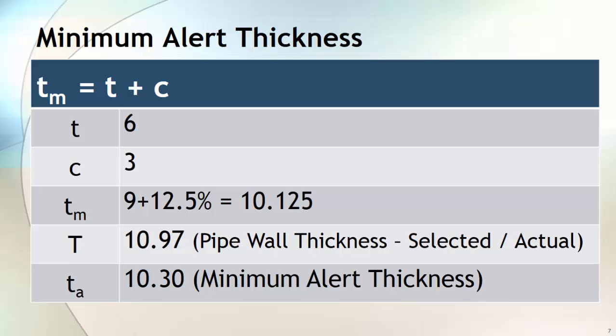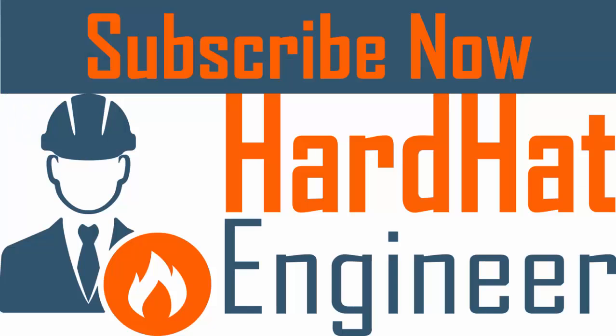Hope you understand the concept of the different types of thickness used in API 570, and now you will get the answer to the question I asked at the beginning of this video. That's all. What do you want to learn next? Just write in the comments and don't forget to subscribe to my channel. See you soon with your requested video. Thank you.